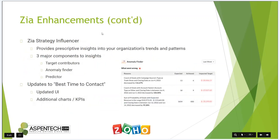Zia Strategy Influencer is a brand new tool within the Zia portfolio in Zoho. It looks at trends and patterns and makes recommendations — not simple ones like 'sell more,' but actually trying to determine why certain things are happening within the system, why certain anomalies take place, or predicting certain things in the future based on other factors from the past. They've also updated the best time to contact feature with a new user interface, and there are additional charts and KPIs that tie into that, showing how it's being utilized within your CRM deployment.